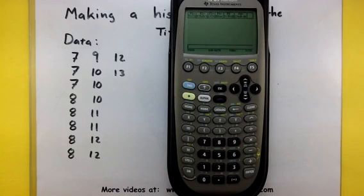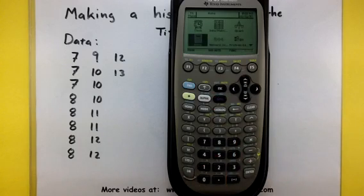Alright, so the first thing I need to do is get all of this data into the calculator. Right now I'm on the home screen and I want to get to that data matrix editor screen. So I'm going to press apps and then arrow over until I have that data matrix icon highlighted. Then press enter.